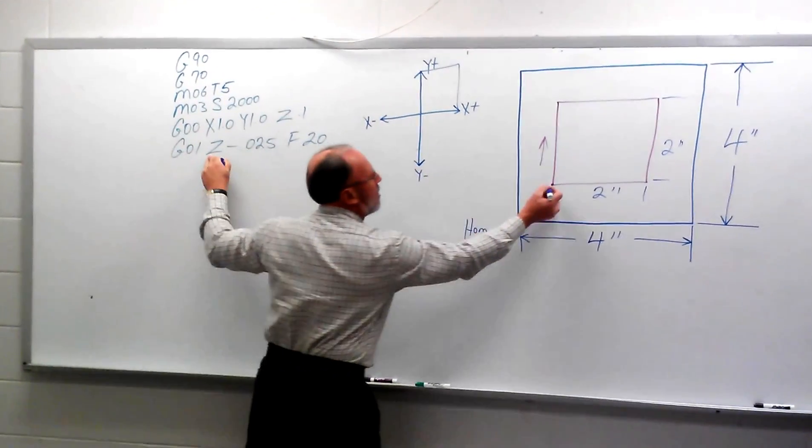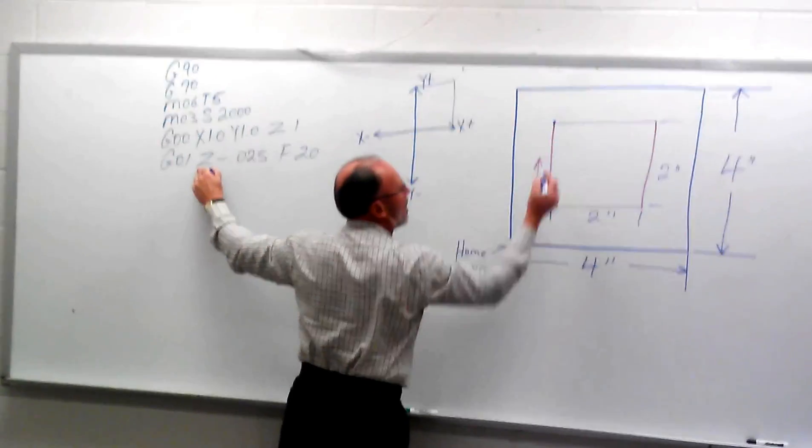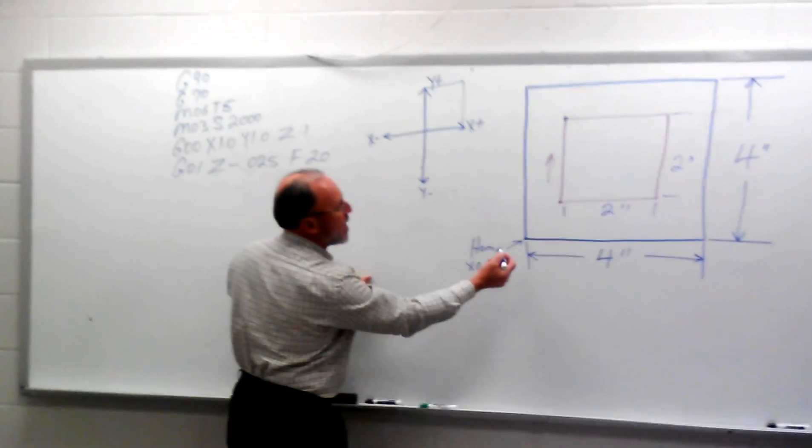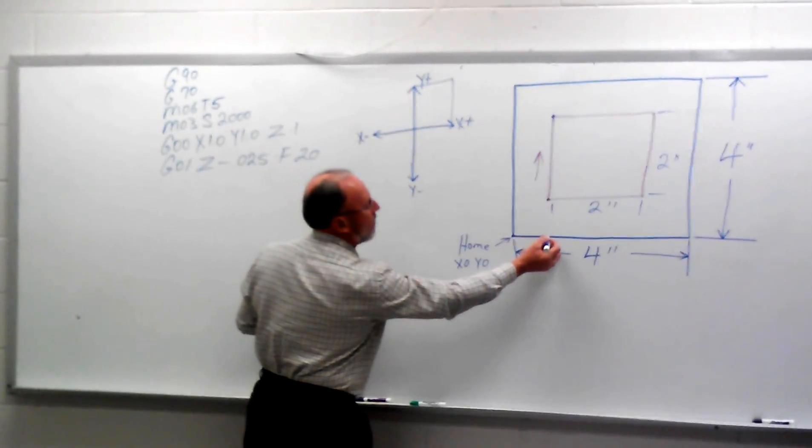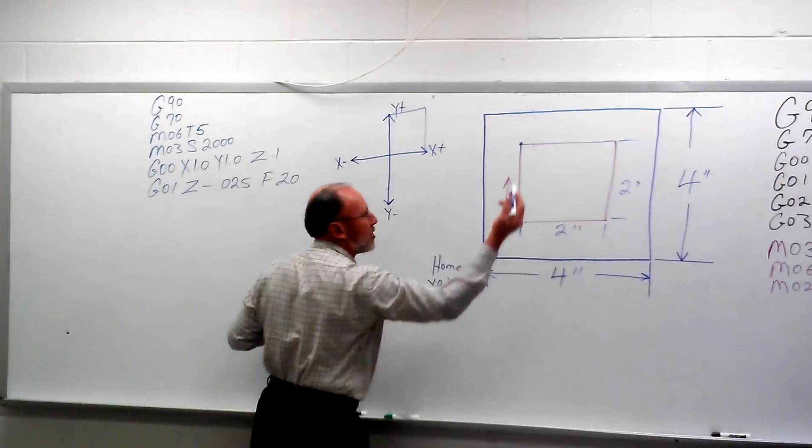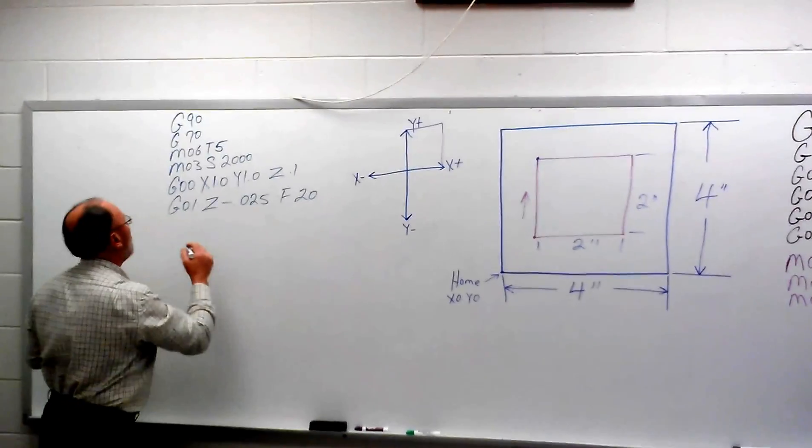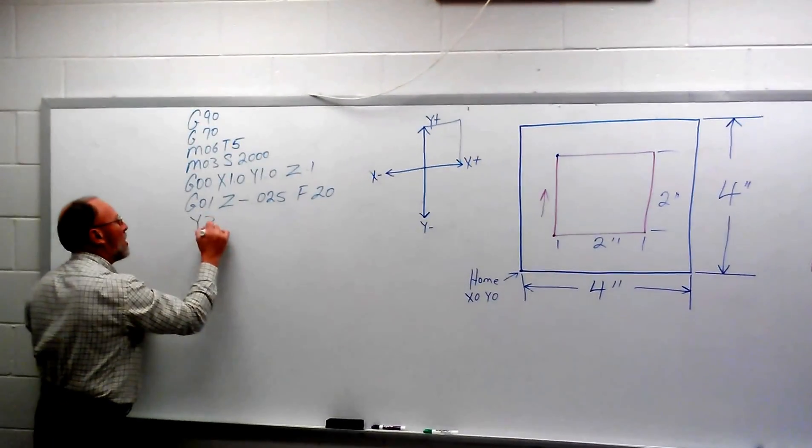Now that we're inside the part here, we need to get to this point. So absolute programming measured from one given point, from here to here is 1 plus 2 is a total of 3 inches on our Y. So that would be Y 3.0.